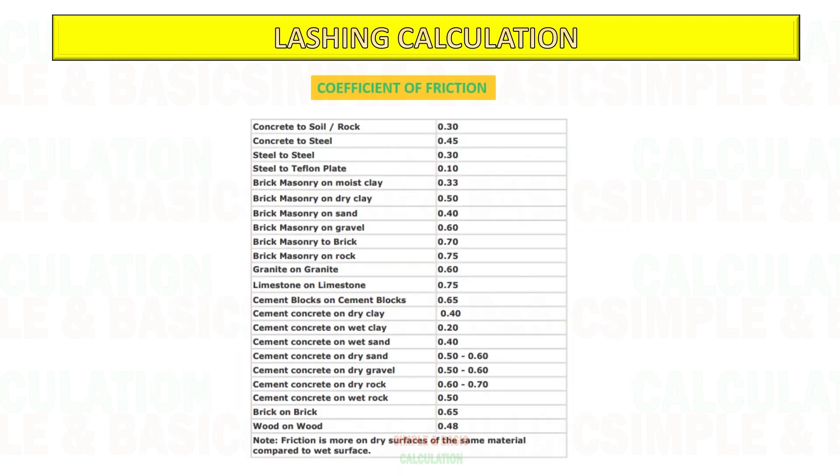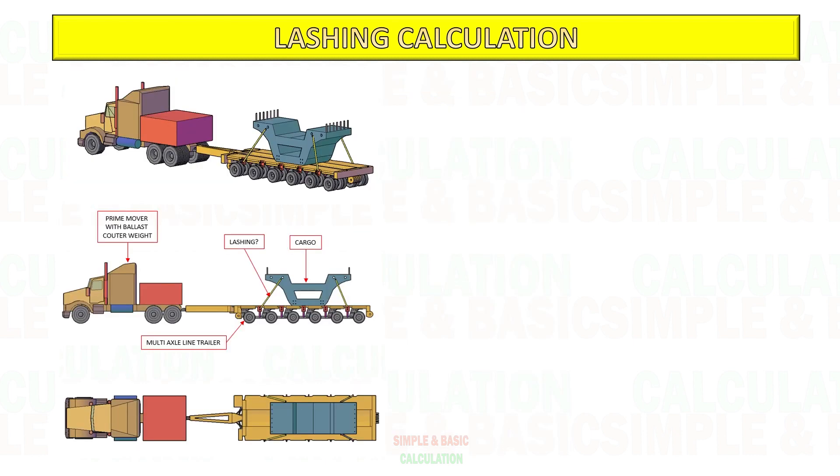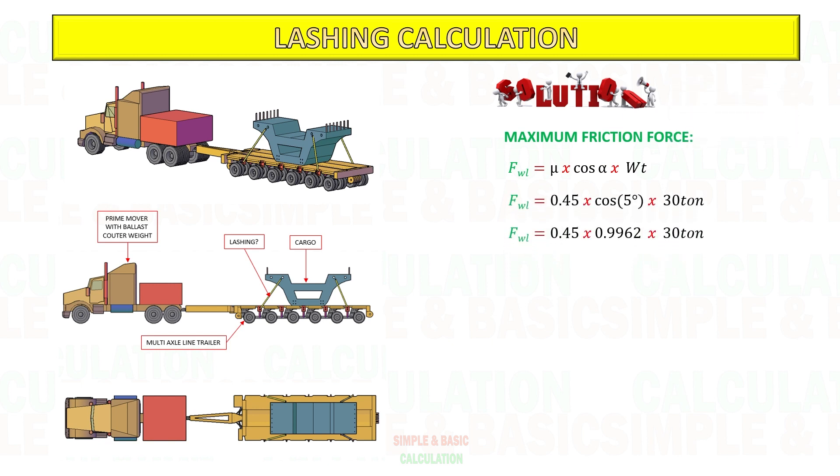This is coefficient of friction between cargo and trailer. Based on the table, concrete to steel friction coefficient is 0.45. Calculate the maximum friction force for longitudinal and transverse direction. Multiply the coefficient of friction to weight of the cargo and gradient slope on the road.